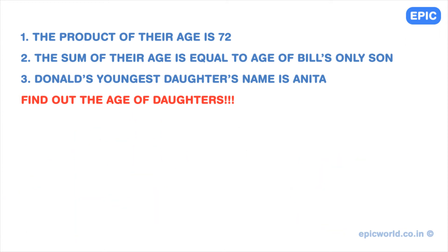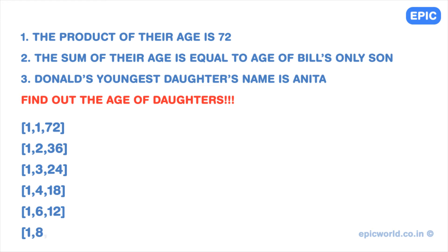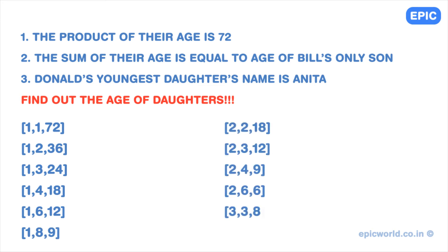Here is the answer. Let us start by writing down all the possibilities. Since the product of their ages is 72, the possible sets are as follows. There are 12 possibilities, with combinations like 1, 1, and 72 being too far-fetched. Obviously this is not sufficient information to determine their ages.